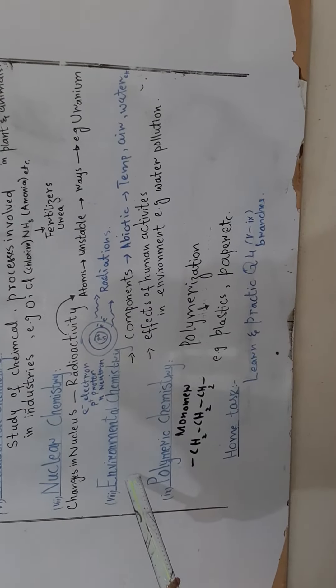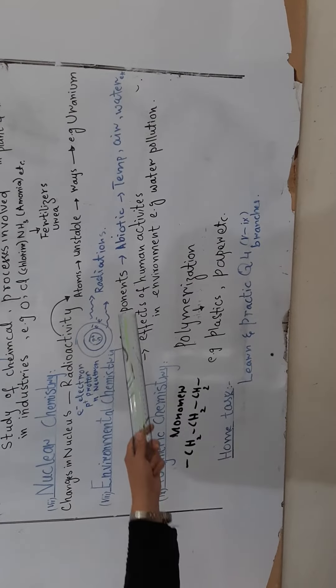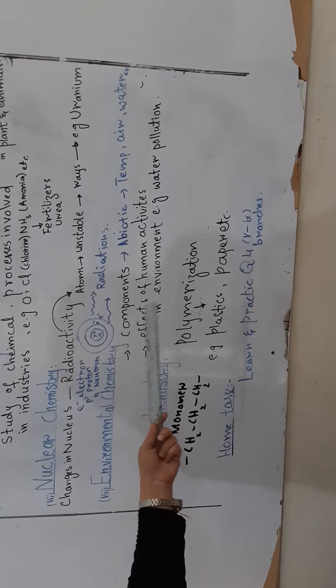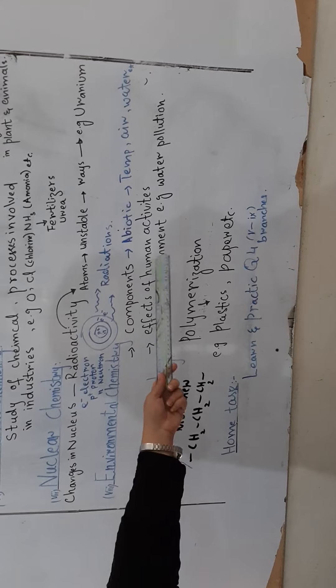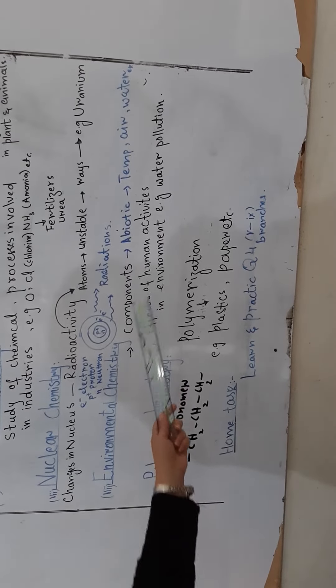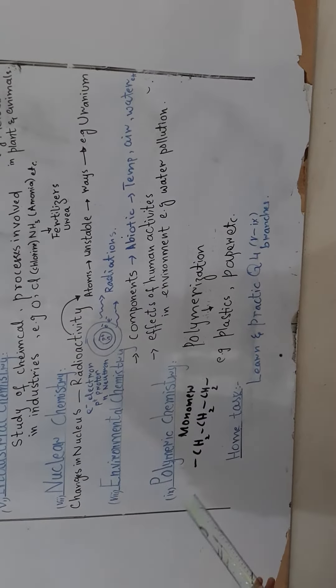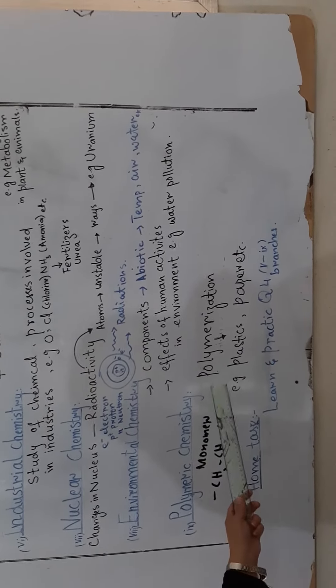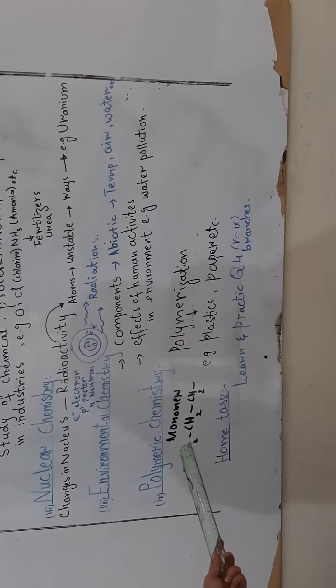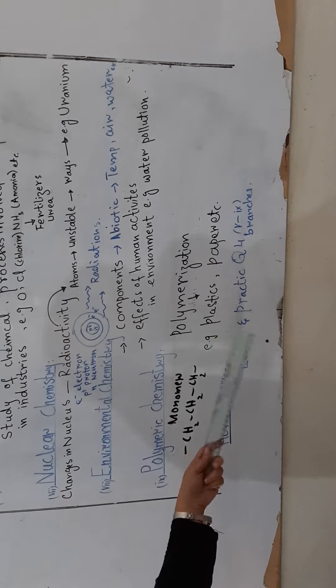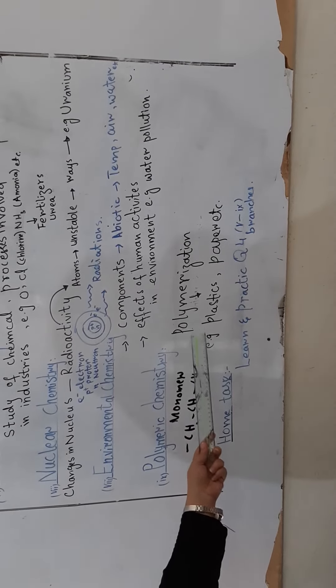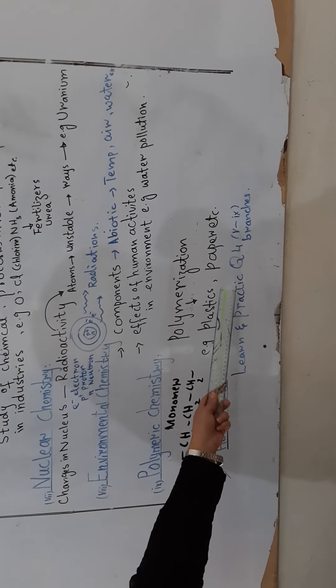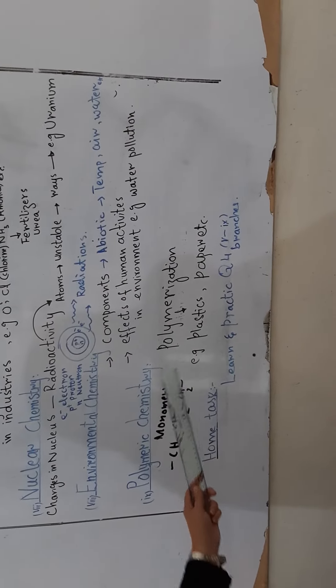The next branch is environmental chemistry, which studies different interactions with the environment's effect on the atmosphere. The next branch is polymeric chemistry. Polymeric chemistry is usually concerned with polymerization. Polymerization is what happens when different types of monomers combine to form polymers through a process. This process is called polymerization. Like PVC, plastics and paper industry. There are a lot of things through polymerization techniques.